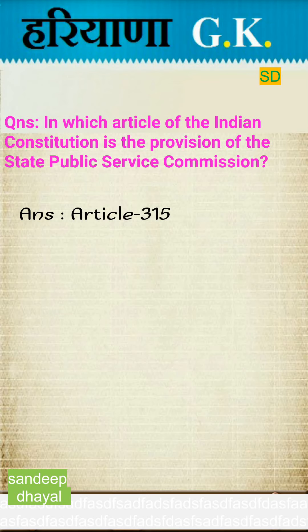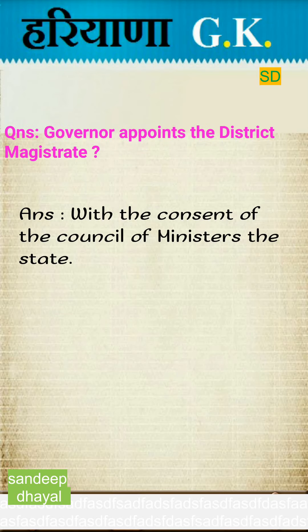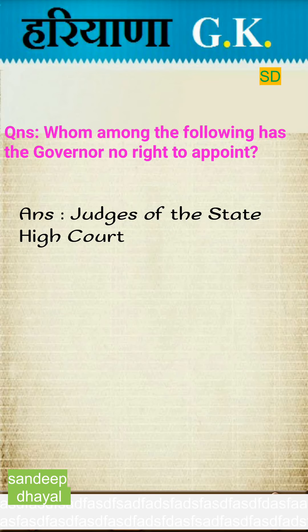In which article of the Indian Constitution is the provision of the State Public Service Commission? Answer: Article 315. The Governor appoints the District Magistrate with the consent of the Council of Ministers of the state. Who has the right to appoint judges of the state High Court? The Governor does not have this right.